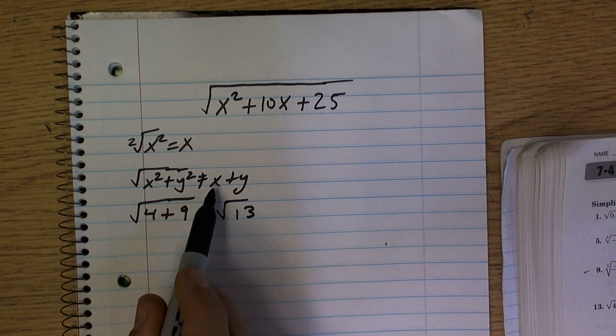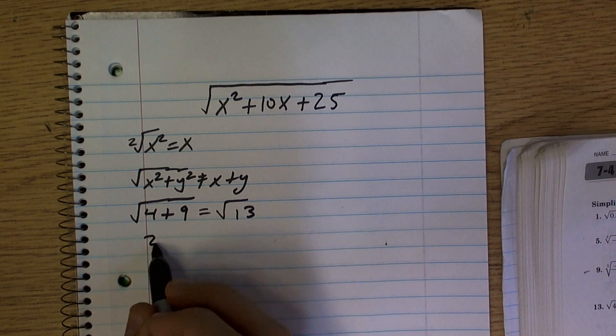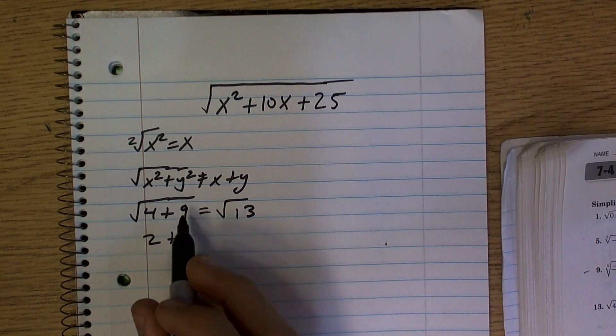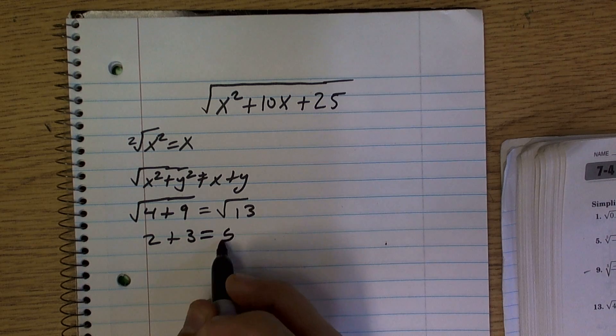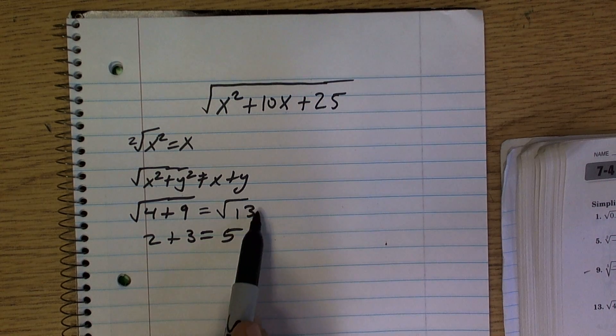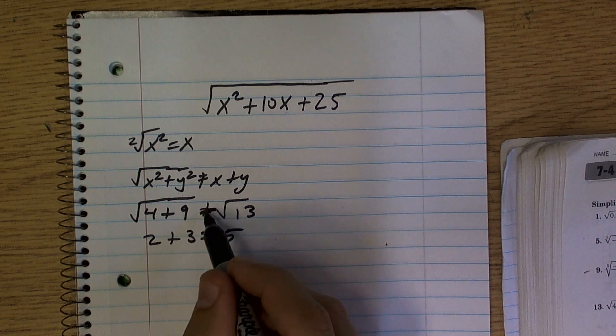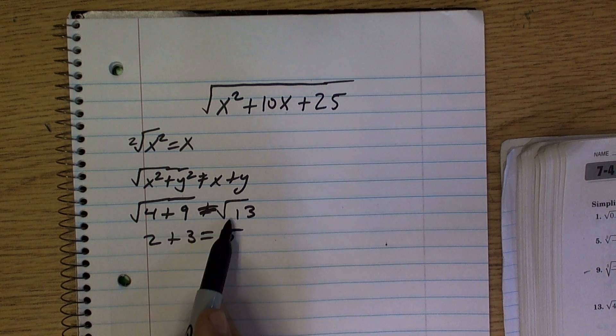It does not equal the square root of 4, which is 2, plus the square root of 9, which is 3. See how those answers are different? The square root of 13 does not equal 5.